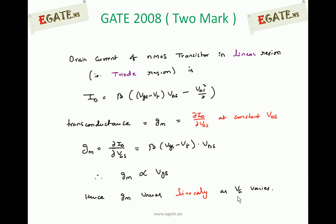The transconductance equation is β(Vgs - Vt)Vds. But Vds is constant, so gm is proportional to Vgs - Vt. We can say that gm is proportional to Vgs.